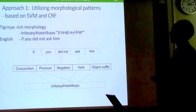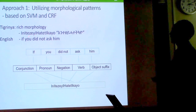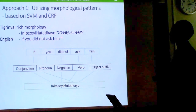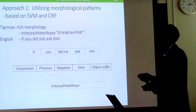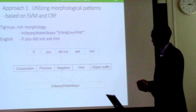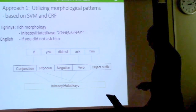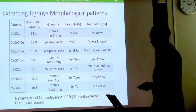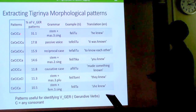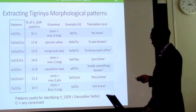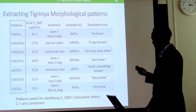In the first approach, we utilized morphological patterns based on SVMs and CRFs. Since Tigrinya is morphologically complex, a single token such as 'if you did not ask him' in English is embedded in one Tigrinya word. By using this morphological information we aim to improve POS tagging performance. We extracted morphological patterns specific to verbs and other parts of speech.